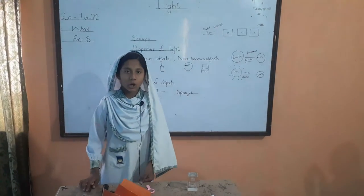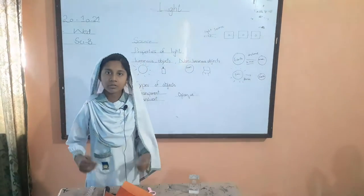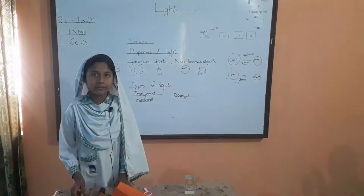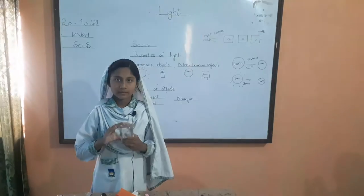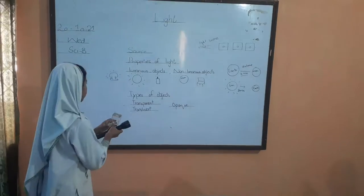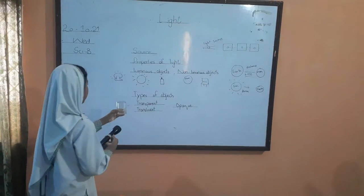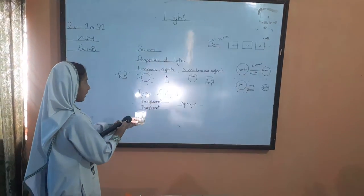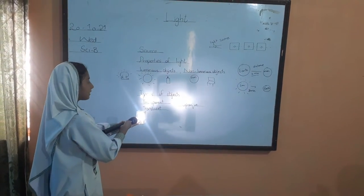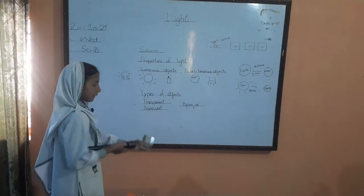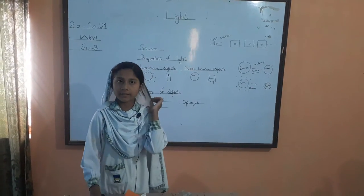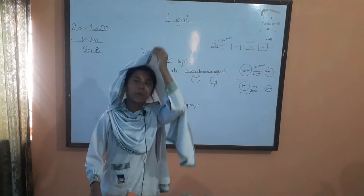Translucent. The object which allows only some sunlight to pass through it is called a translucent object. Like this showpiece is a translucent object. Some light passes through this showpiece, so we know that it is a translucent object.